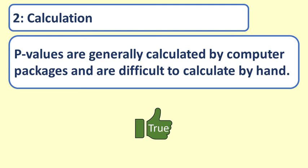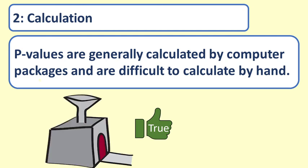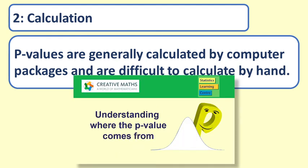True. It is not easy to calculate a p-value, which is why they were not widely used until we had computers. You would just about always use a computer to calculate a p-value. For further explanation, watch the video understanding where the p-value comes from.